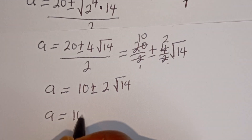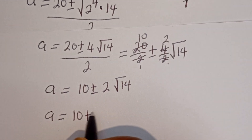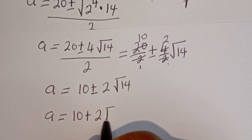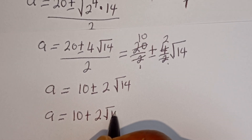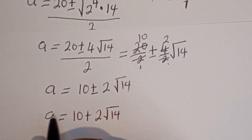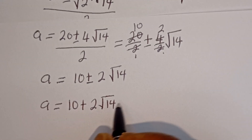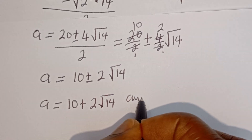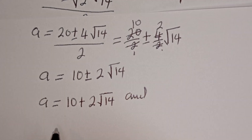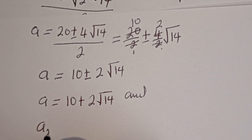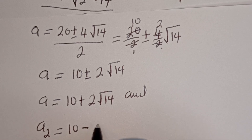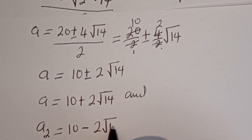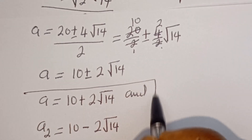Therefore a is equal to 10 plus 2 square root of 14, and a is equal to 10 minus 2 square root of 14. These are the values of a.